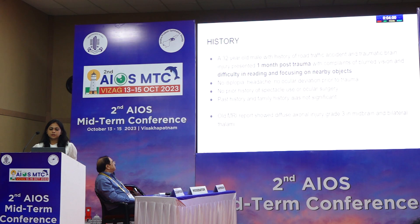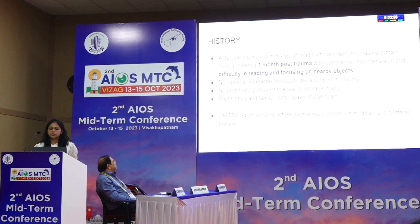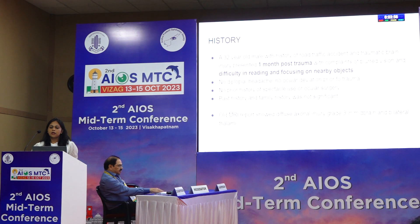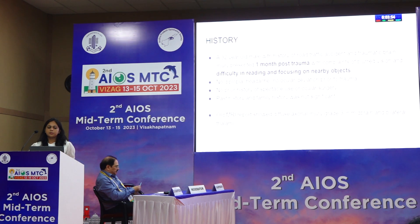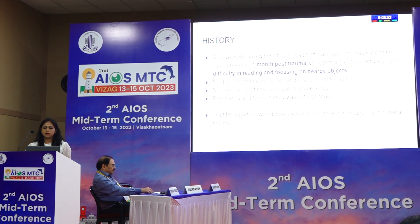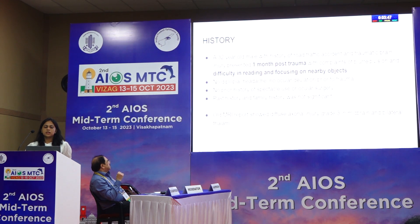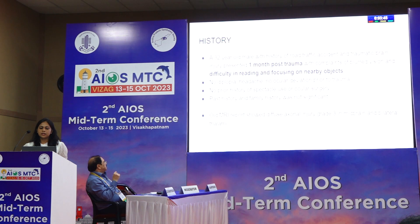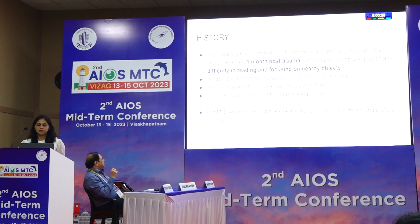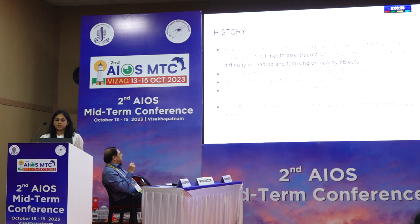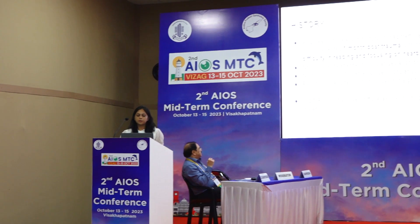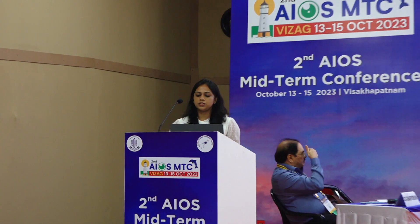A 32-year-old male patient presented with a history of road traffic accident and traumatic brain injury. He presented one month post-trauma with complaints of blurred vision and difficulty in reading and focusing on nearby objects. There was no history of diplopia, headache, ocular deviation prior to trauma, spectacle usage or ocular surgery. The old MRI report showed diffuse axonal injury of grade 3 in the midbrain and bilateral thalami.